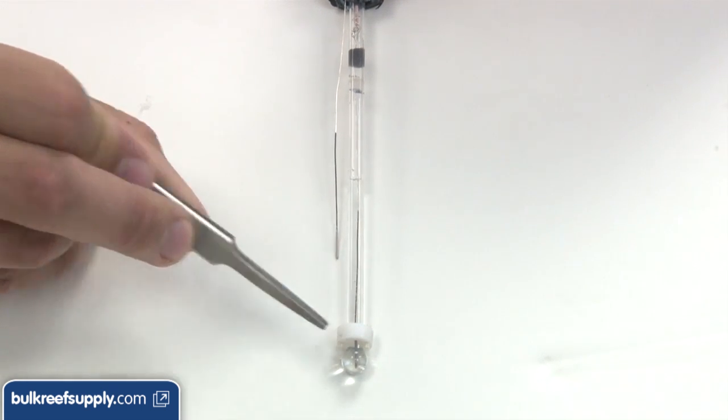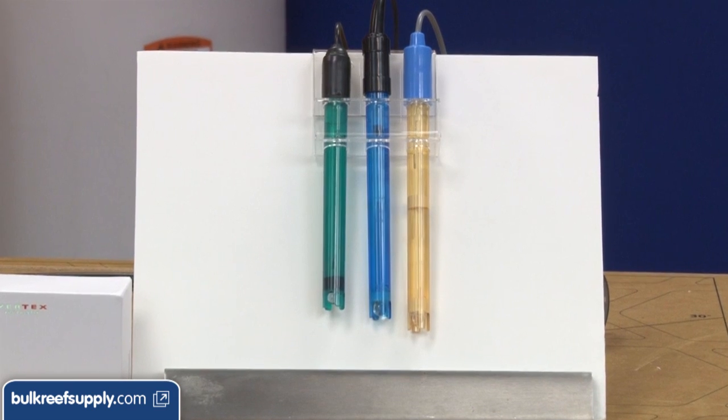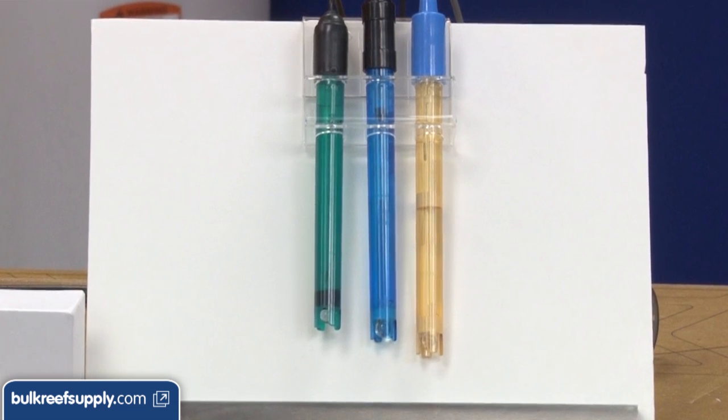The concept is really that simple. This is pretty much what a single junction pH probe looks like once they are disassembled. These are three different brands and you can see for the most part they all look fairly similar. The technology that goes into building a probe is pretty old and well understood. For that reason, the manufacturing is often outsourced to Asia and the result is normally a good probe that comes at an affordable price.